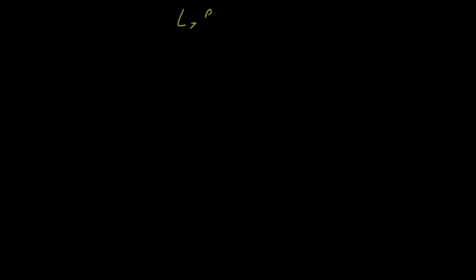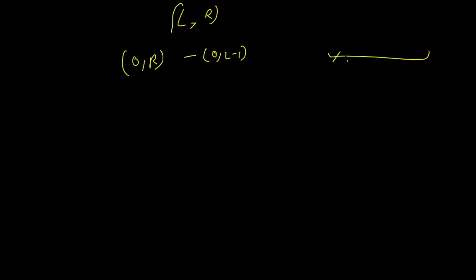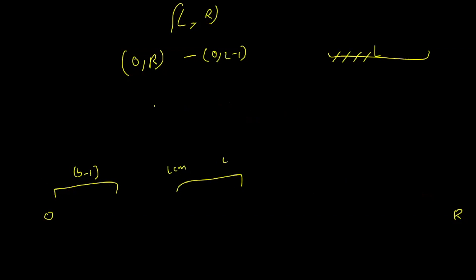Now let's see how you find the answer. You're given L to R, so you find the answer from 0 to R and subtract the answer from 0 to L minus 1 — a very standard algorithm. To find the count from 0 to R: the numbers that won't be counted are the first B minus 1 numbers, then a block from LCM to LCM+B-1, then a second block from 2×LCM to 2×LCM+B-1, and so on until the last block.